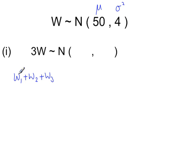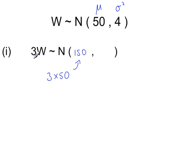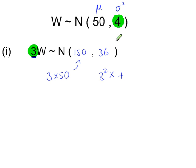For 3w, we're multiplying — so the mean is 3 times 50. For the variance, the multiplier has to be squared first, and then you multiply by the original variance to get the new variance. So 3 squared times 4.